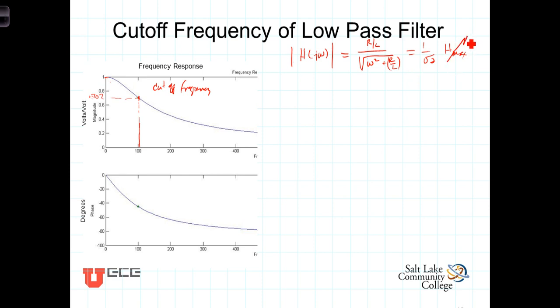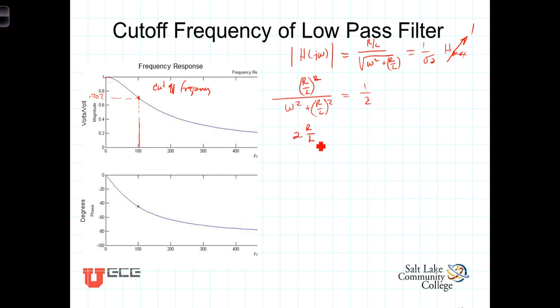We've already noted that for this filter H max equals 1. Squaring both sides of the equation, we get R over L quantity squared divided by omega squared plus R over L squared equals one half. Clearing the denominators by multiplying both sides by 2 and by omega squared plus R over L squared, we get 2 times R over L squared equals omega squared plus R over L squared. Subtracting R over L squared from each side gives R over L squared equals omega squared.